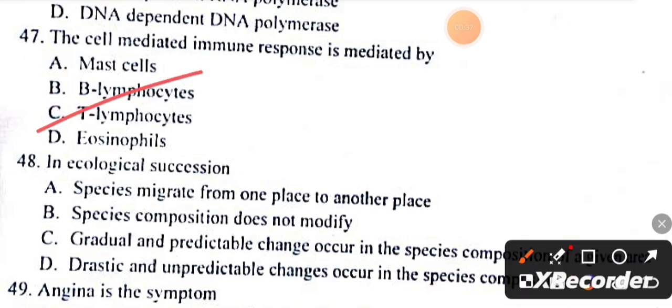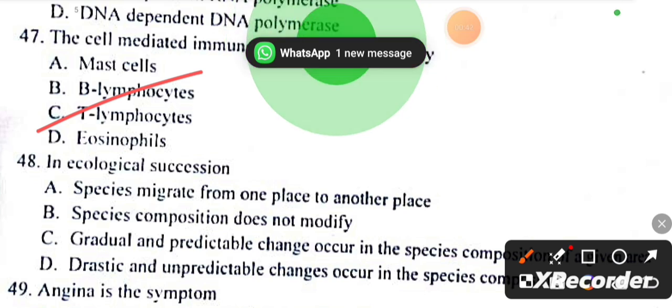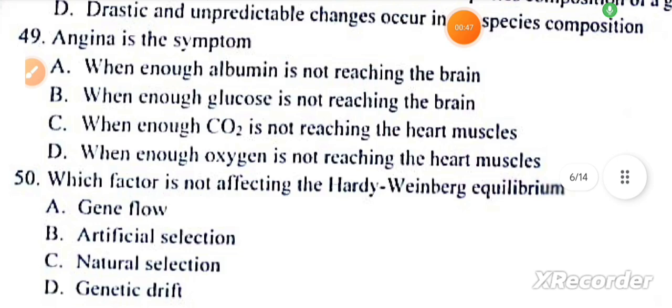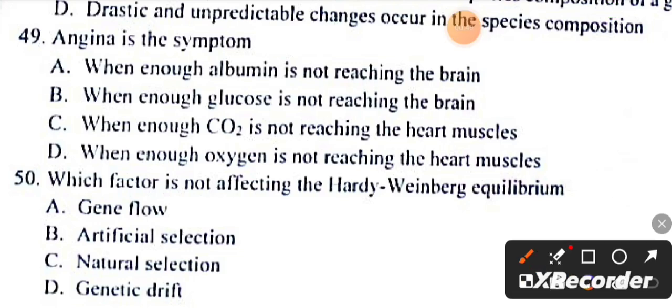In ecological succession, gradual and predictable changes occur in species composition of the given area. Question number 49: Angina is the symptom when enough oxygen is not reaching the heart muscles.